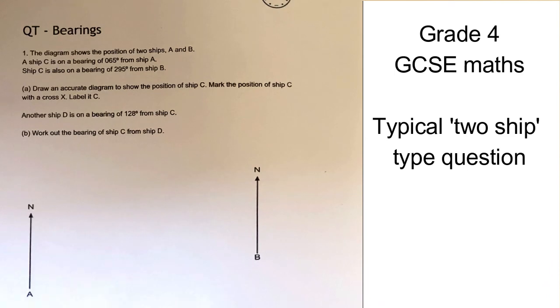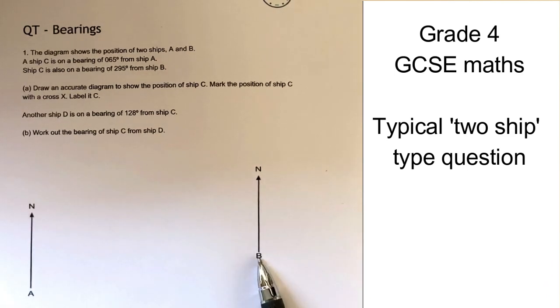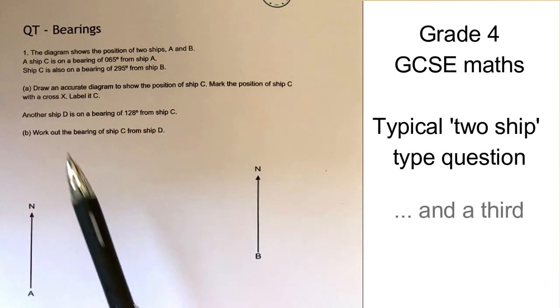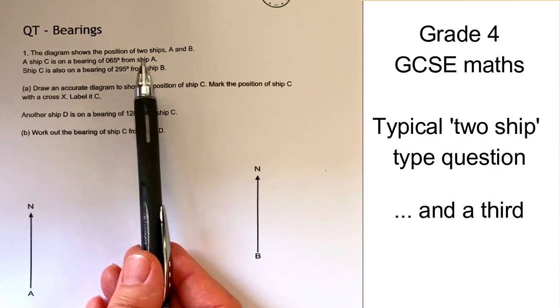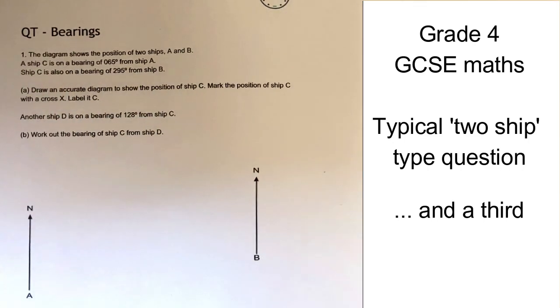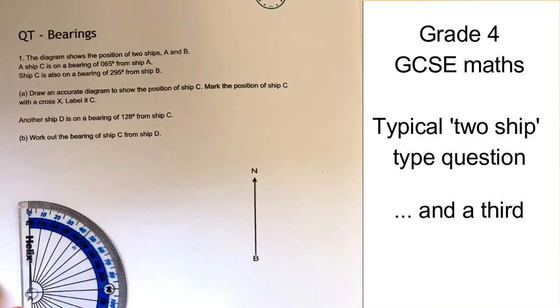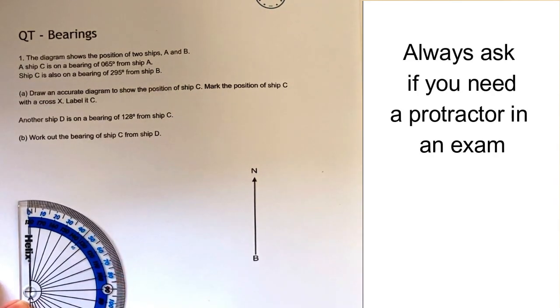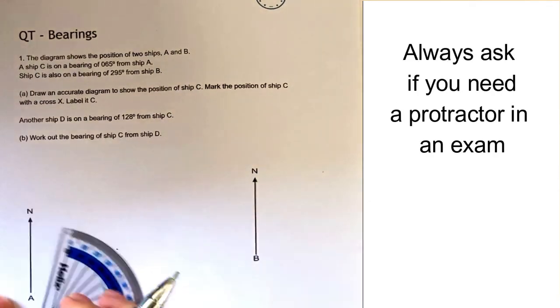We're looking at two ships where we've got A and B, and what we're told is there is a third ship which is on a bearing of 65 degrees from ship A. So what we would do is use our protractor to measure 65 degrees from this and then draw a line.